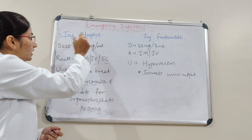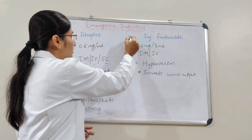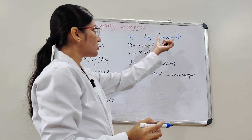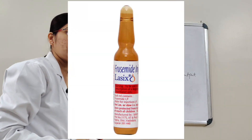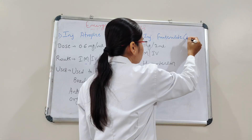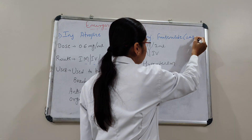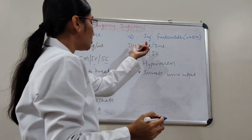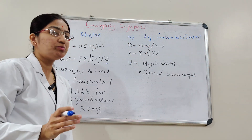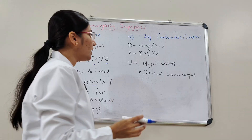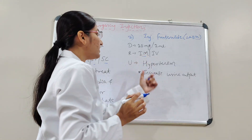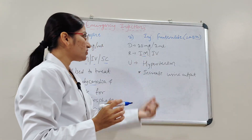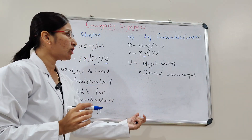The second injection is Furosemide, also called Lasix. The dose is 20 mg per 2 ml, routes are intramuscular and intravenous. It is used to treat hypertension and also for increasing urine output.